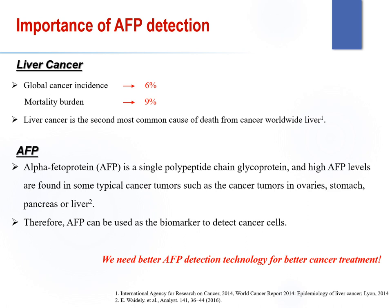From the related literature, liver cancer represents 6% and 9% of the global cancer incidence and mortality burden respectively, and is the second most common cause of death from cancer worldwide. Alpha-fetoprotein (AFP) is a single polypeptide chain glycoprotein, and high AFP levels are found in some typical cancer tumors such as those in the stomach or liver. Therefore, AFP can be used as a biomarker to detect cancer cells, and we need better AFP detection technology for better cancer treatment.